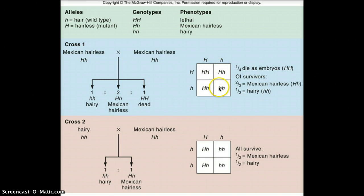And so you get a one to two to one genotype ratio. And in this instance, that also happens to be the phenotype ratio. So we get a one to two to one phenotype ratio with one out of four having the lethal allele combination.